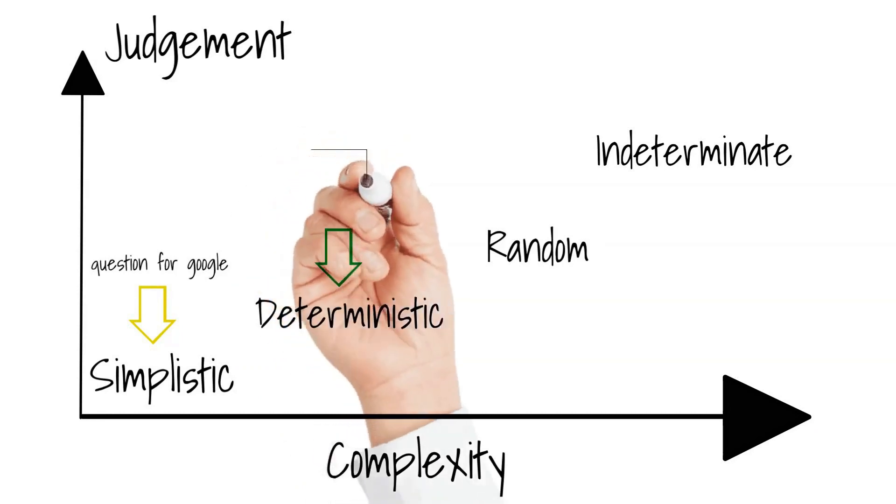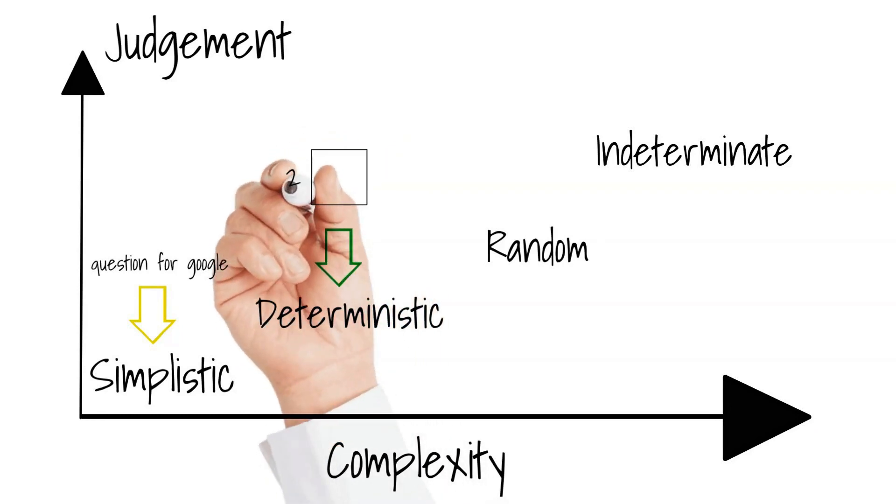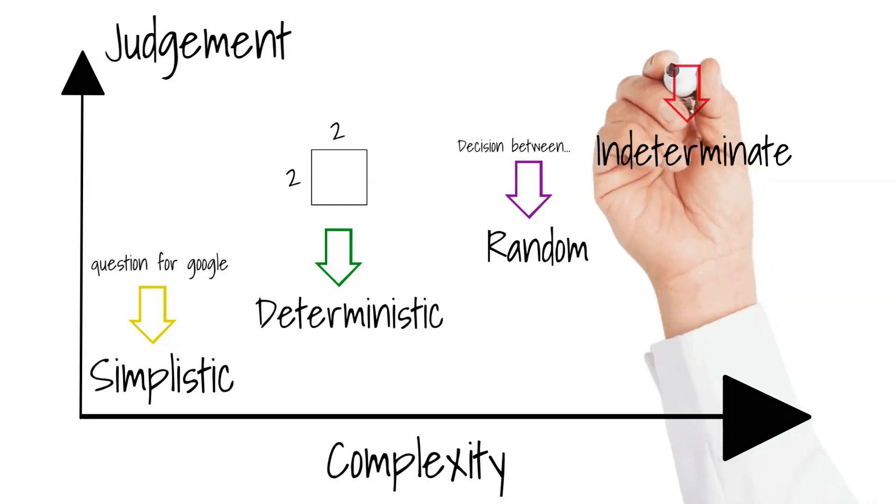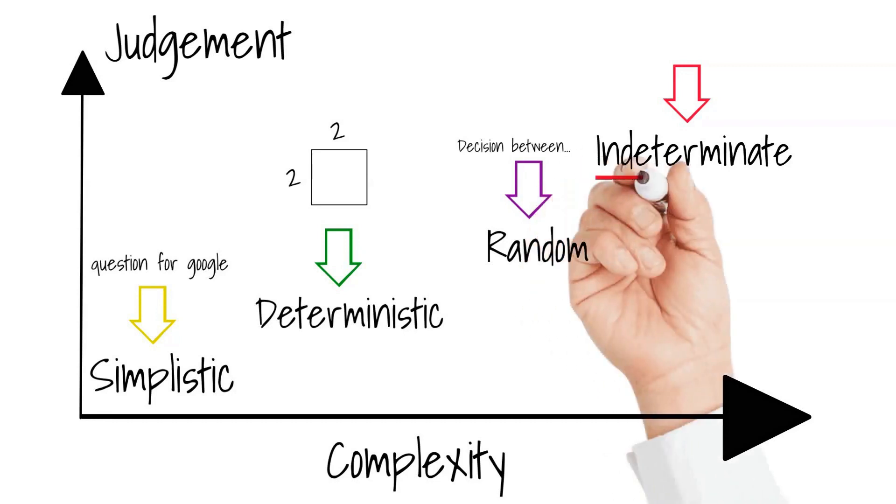We can categorize problems in the following four buckets: simplistic, deterministic, random, and indeterminate. Simplistic problems are problems with only one answer, they are basically easy to Google. Deterministic problems also only have one right answer but there is a formula involved. Random problems describe problems where multiple answers are possible and all answers are identified. Indeterminate problems are problems with multiple possible answers and all answers cannot be identified. This problem needs a lot of judgment from the problem solver, for example, how can we increase the profit of a company.